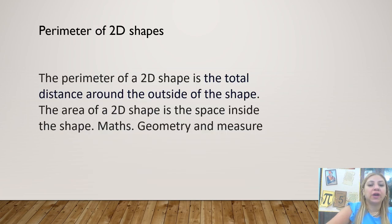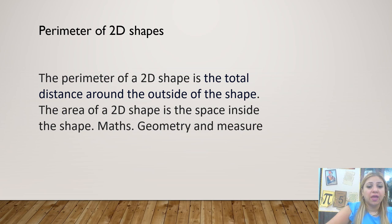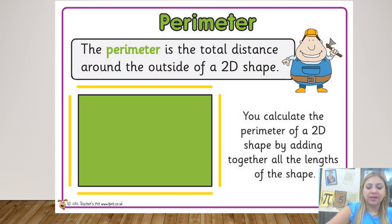We also learn about how to find the perimeter of 2D shapes. The perimeter of a 2D shape is the total distance around the outside of the shape. The area is the inside, and the perimeter is the outside. The area of a 2D shape is the space inside the shape. You calculate the perimeter of a 2D shape by adding together all the lengths of the sides of the shape.